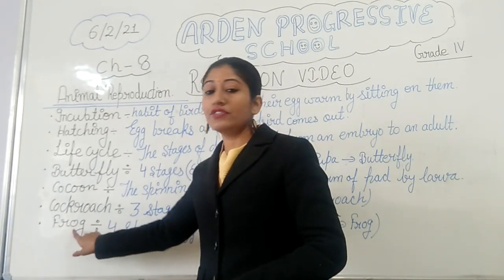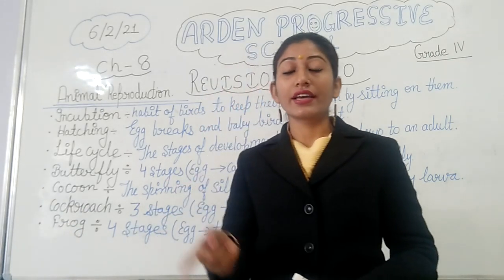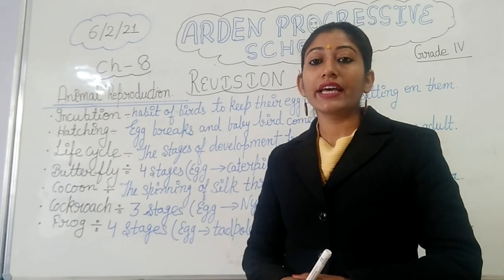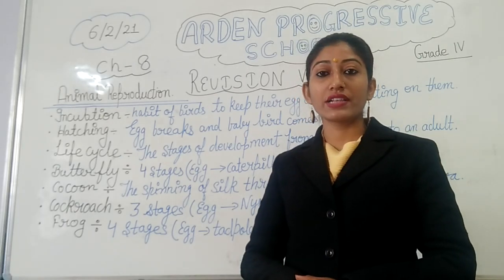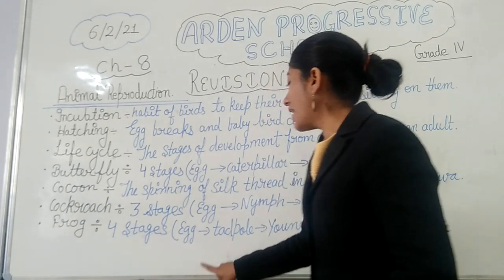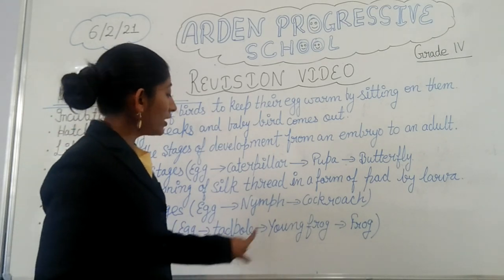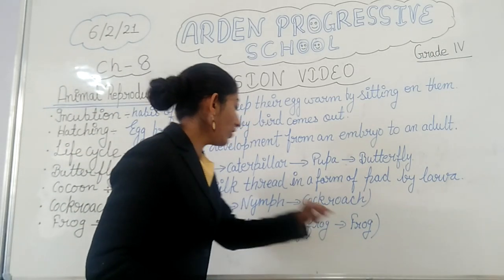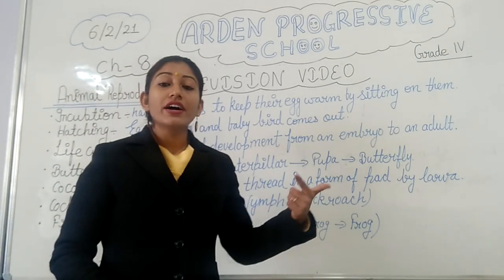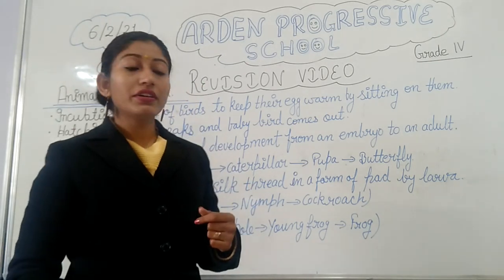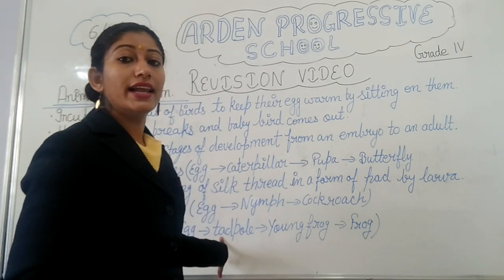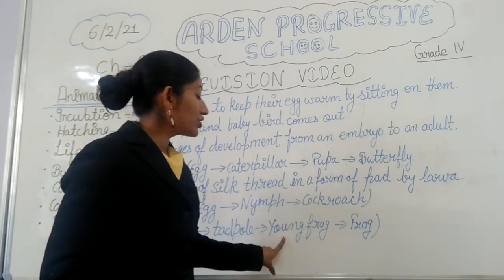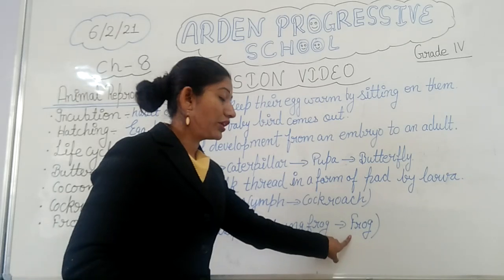Next one is frog. How many stages are there in the life cycle of frog? In the frog's life cycle there are four stages. These are: egg, tadpole, young frog, and then frog. If we talk about the larva stage of frog, then tadpole is the larva of frog. After this larva stage, tadpole changes into young frog, and then young frog changes into the adult frog.